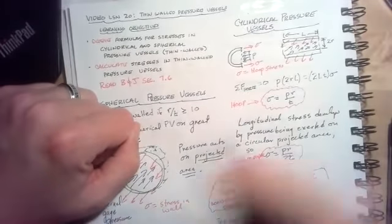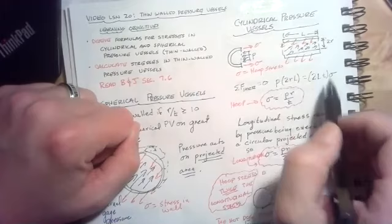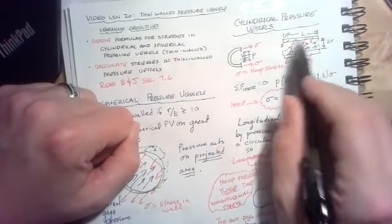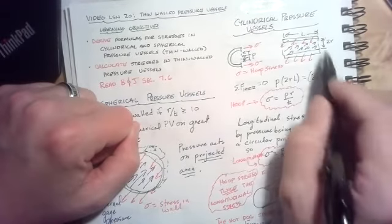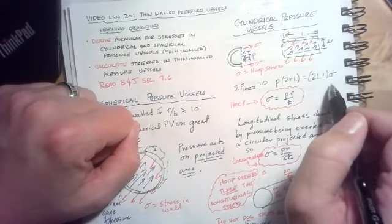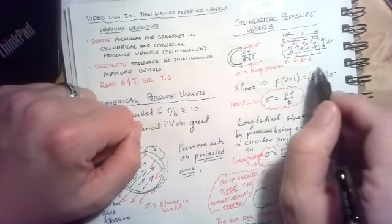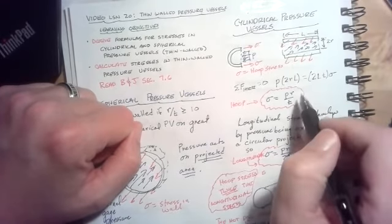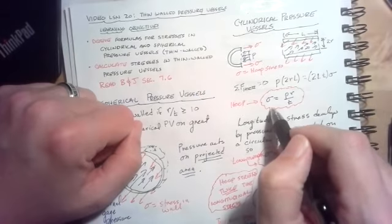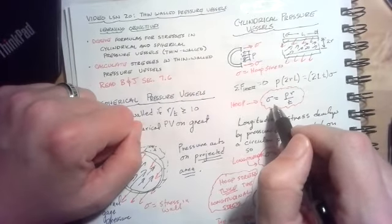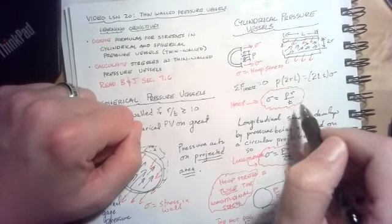And then the stress resultant in the walls would be 2L, because we've got two sections, they're L long, and then they're both T thick, times sigma. When I equate these two and simplify, I end up with an equation for hoop stress that says sigma equals PR over T.